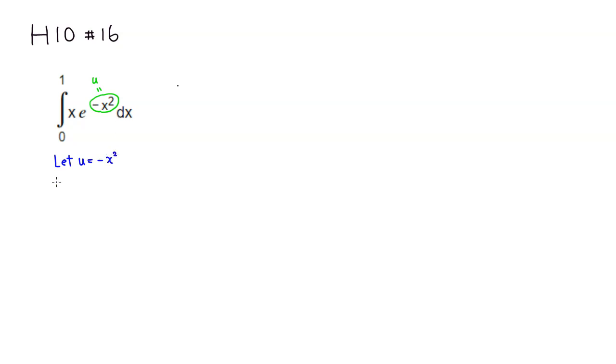I'm going to go through the usual drills. We're going to take the derivative of u with respect to the original variable x, which is going to give us negative 2x.